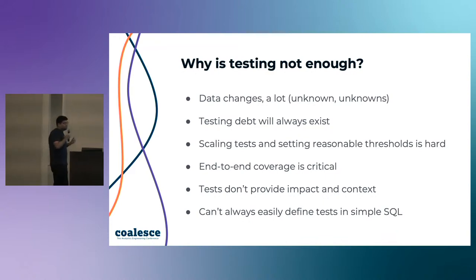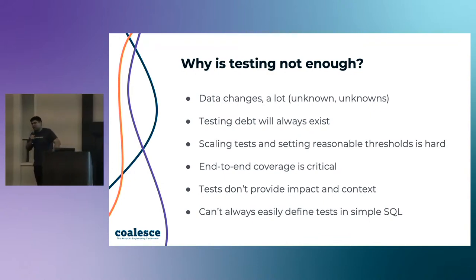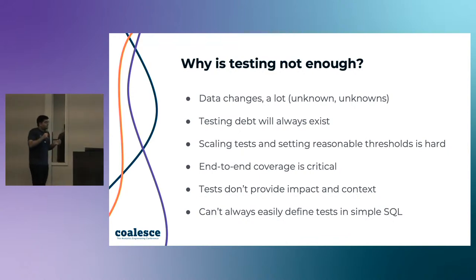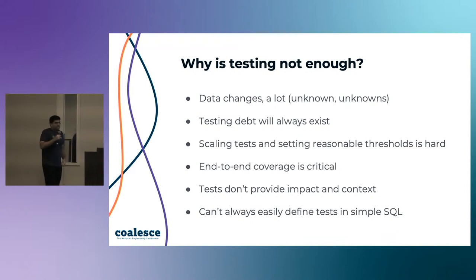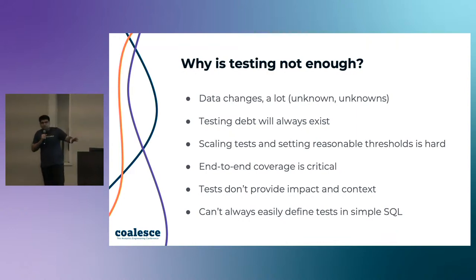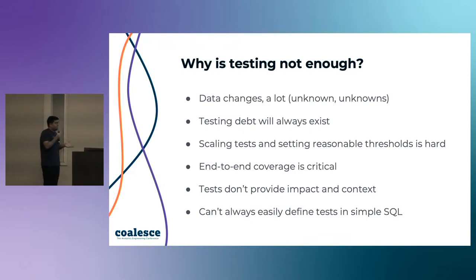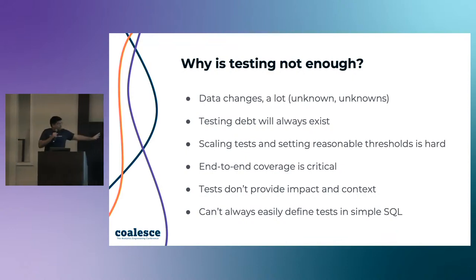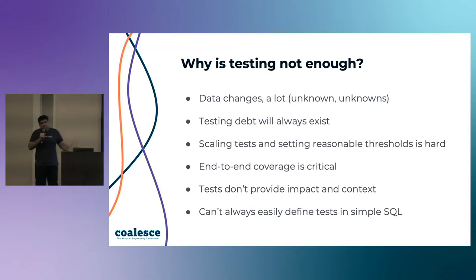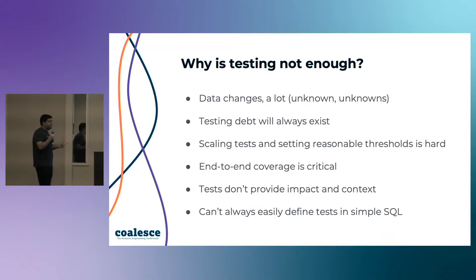Scaling tests is hard — there's a lot of cognitive load. Having 10 or 100 tests is fine, but thousands of tests you don't know how to manage gets complicated. Setting them at reasonable thresholds requires deep understanding of the data. How do you know what absolute number makes sense? If your null rate should always be zero, easy. But if you can have a 10% null rate and the data changes so 10% becomes 11% and it breaks — but the data might actually be fine — that's hard to account for. End-to-end coverage is also critical: dbt does a great job with its own tests, but what about what's upstream and downstream of dbt, and all the other data resources you use?